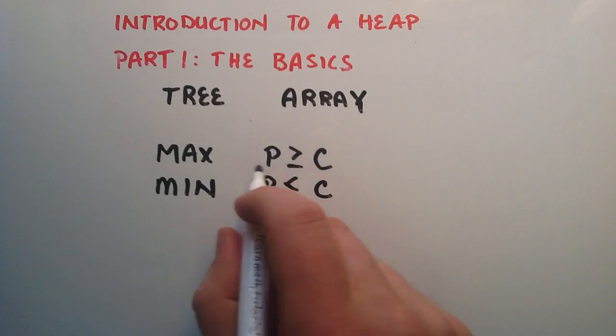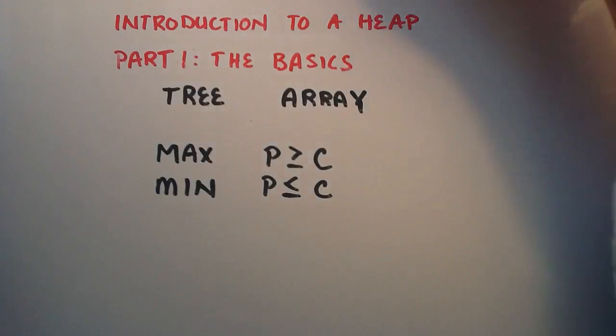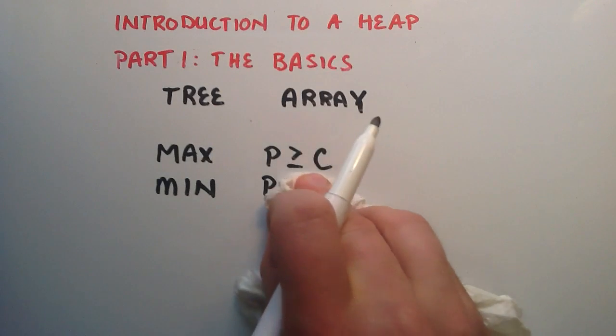So because of this property, a max heap will always have its greatest value at the root, and a min heap will always have its minimum value at the root. So let's go ahead and look at the max heap in a little bit more detail here.